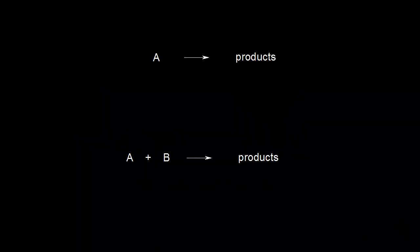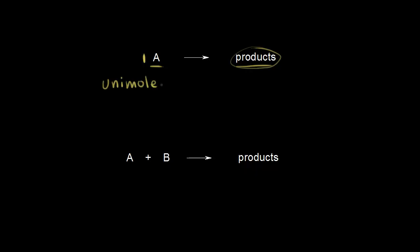Let's say we have a simple elementary reaction where we have only one reactant A turning into our products. We can classify this reaction according to its molecularity, which refers to the number of participating molecules. So if we think about one molecule of A giving us our products, this would be a unimolecular reaction — we have only one molecule.